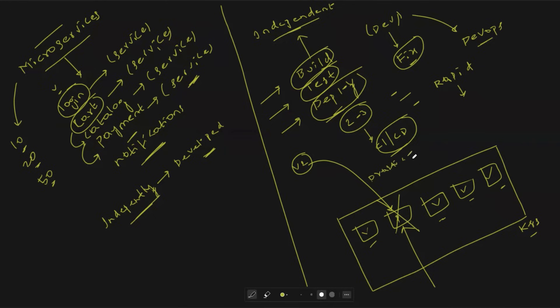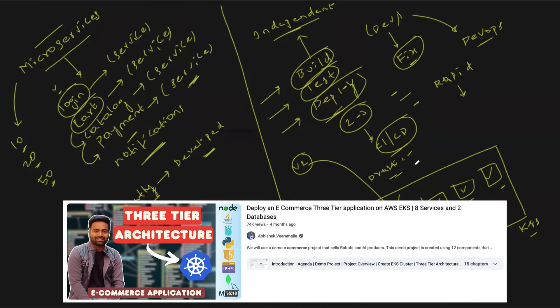This is the advantage you get with the microservice architecture. If you want to see practically how microservice architecture code looks and how to deploy it onto a Kubernetes cluster, watch the linked video in the description — where I've explained end-to-end deployment of 11 microservices onto a Kubernetes cluster. Thank you so much for watching. See you in the next one. Take care, bye-bye.